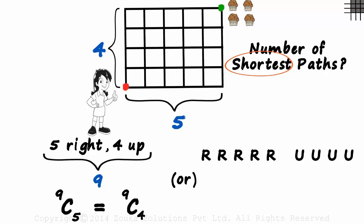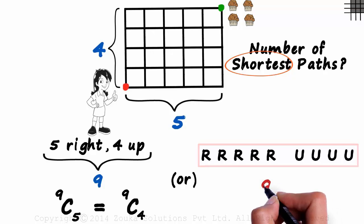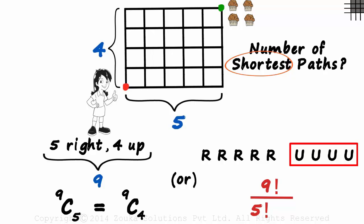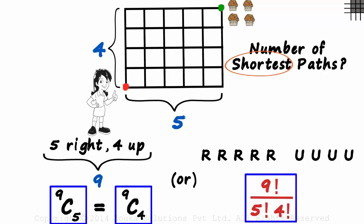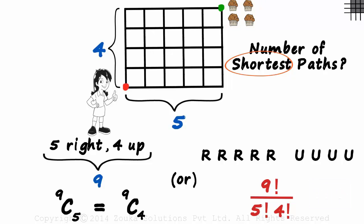This should remind you of the anagram problem we had solved with the word 'excessive.' As there were nine letters, we wrote 9 factorial; E was present thrice, so we divided by 3 factorial; S was present twice, so we divided by 2 factorial. We apply the same logic here: nine letters total, so we write 9 factorial; R appears five times, so divide by 5 factorial; U appears four times, so divide by 4 factorial. This also gives us the same answer — all three methods give us 126. Zara can take 126 different shortest paths to reach the cake shop. You may use any method you like, but make sure you understand the concept well.